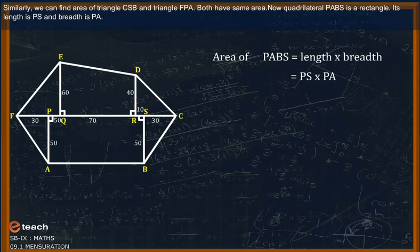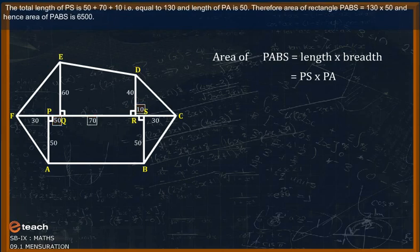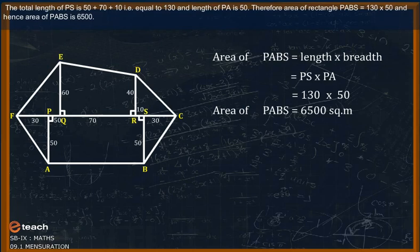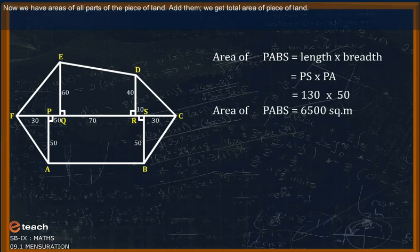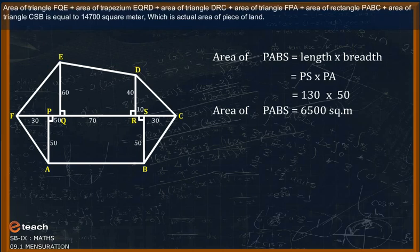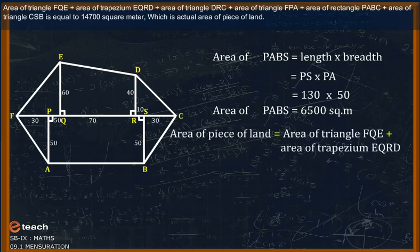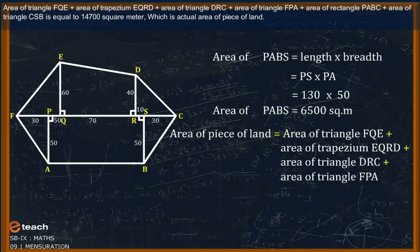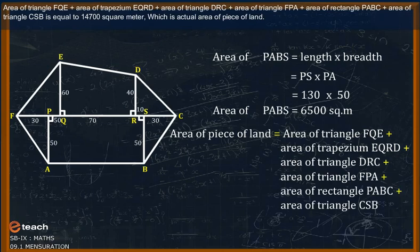Quadrilateral PABS is a rectangle. Its length PS = 50 + 70 + 10 = 130 and breadth PA = 50. Therefore, area of rectangle PABS = 130 × 50 = 6500 square meters. Now we have areas of all parts of the piece of land. Adding them, we get the total area: area of triangle FQE + trapezium EQRD + triangle DRC + triangle FPA + rectangle PABC + triangle CSB.